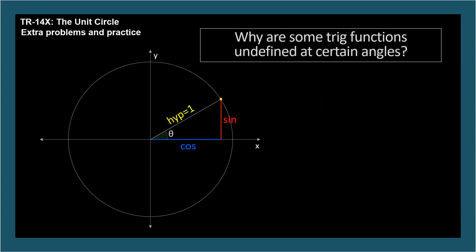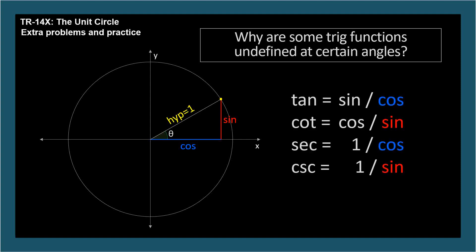Why would some trig functions be undefined at certain angles? Four of the ratios that describe trig functions have sine or cosine in their denominator, either of which will be 0 for certain quadrantal angles. For example, cotangent and cosecant are undefined at angles where the sine is 0. The sine is the y coordinate, which is 0 at angles 0 and pi radians and coterminal angles at the left and right edge of the circle.